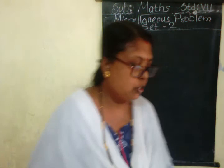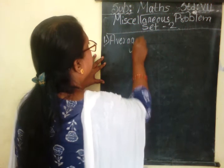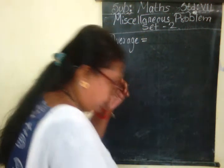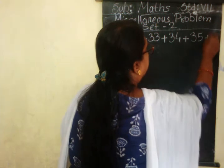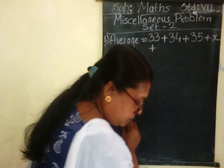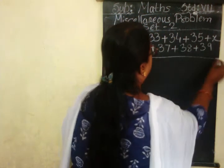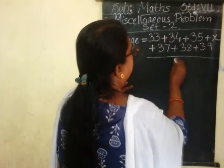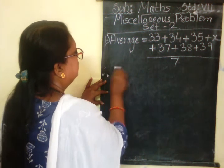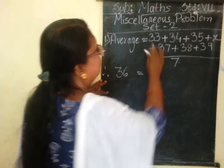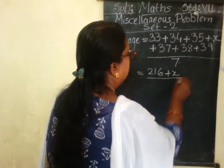As we know, average is equal to the sum of all the numbers divided by the count of numbers. So: 33 plus 34 plus 35 plus X plus 37 plus 38 plus 39, upon 7 numbers. The average is given as 36, so I can write 36 is equal to 216 plus X upon 7.